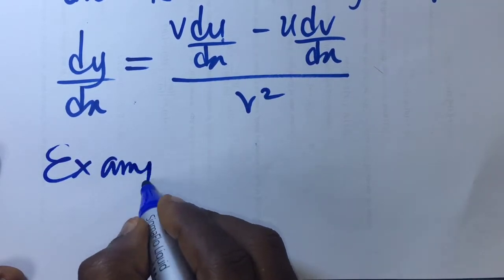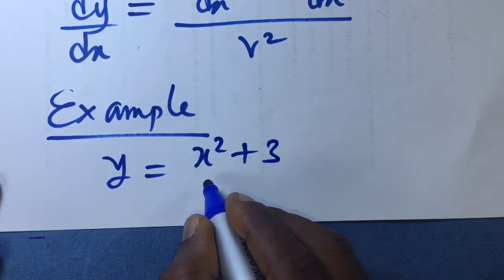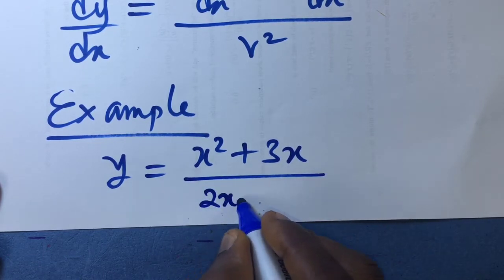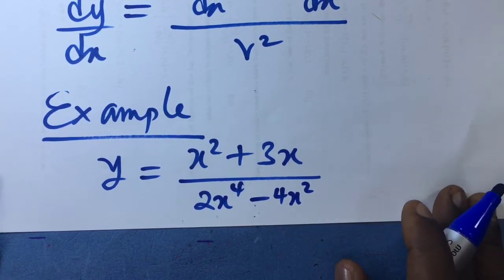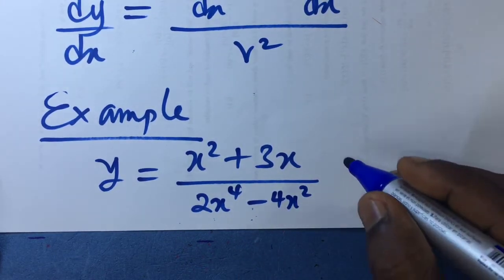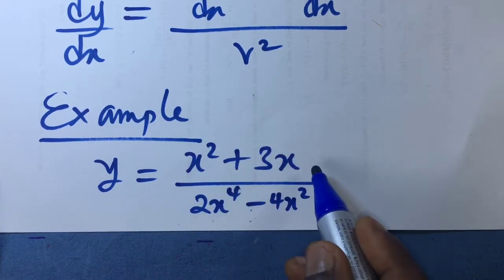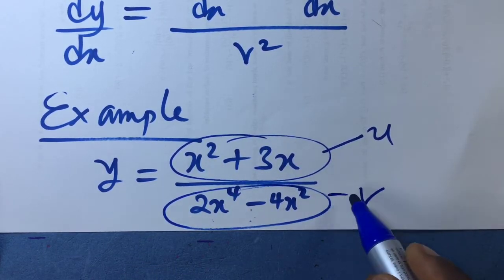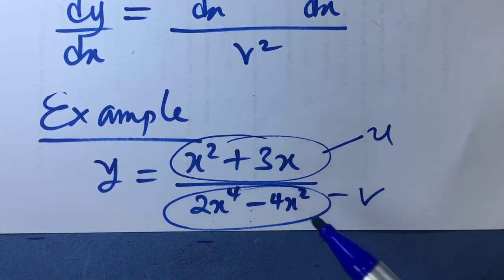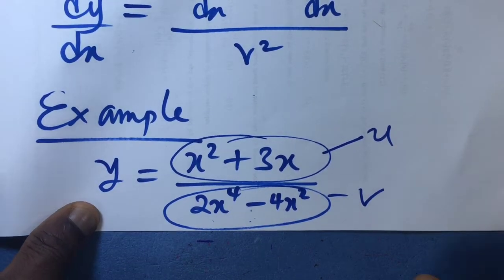Let us assume you are given this to differentiate: y equals x squared plus 3x, all over 2x raised to the power 4 minus 4x squared. Why would the quotient rule be appropriate? It is because this function y, which is dependent on x, is clearly a ratio of two functions. We can call the numerator u and the denominator v, where u and v are both functions of x.